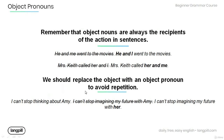We should also replace the object with an object pronoun to avoid repetition. For example: 'I can't stop thinking about Amy. I can't stop imagining my future with Amy.' We can avoid repeating the word 'Amy' by using an object pronoun: 'I can't stop imagining my future with her.'